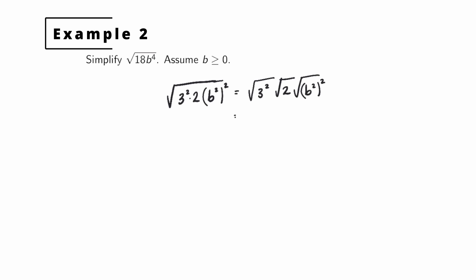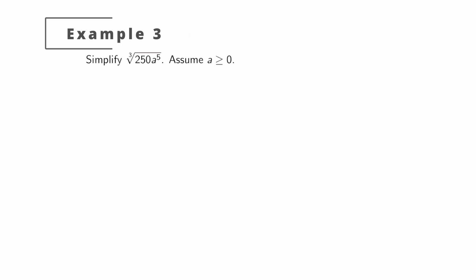The square root of 3 squared: the square root and the square cancel out, leaving just 3. We have the square root of 2, and the square root cancels the outer exponent, leaving just b squared. Rearranging these factors gives 3b squared times the square root of 2. There are no more perfect squares underneath the radical, so we're done.